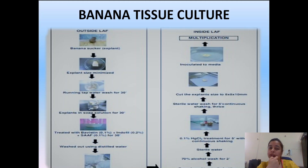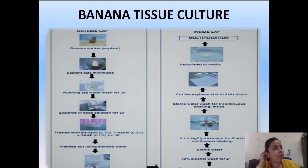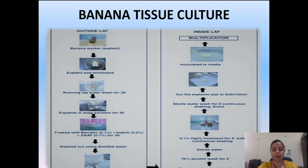The banana sucker is cut and the size is minimized to a very small size. It is then washed in tap water for 30 minutes. The step of surface sterilization of the explant then starts. Surface sterilization consists of three steps: first, washing the explant in simple running tap water for 30 minutes; second, washing in soap solution for 30 minutes.